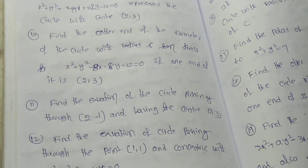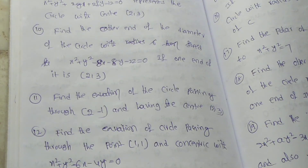Eleventh question: Find the equation of the circle passing through (2, minus 1) and having the center at (2, 3).